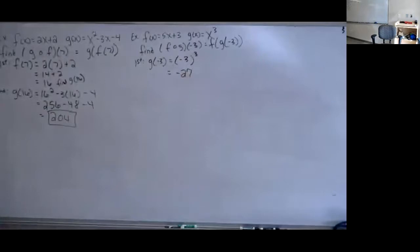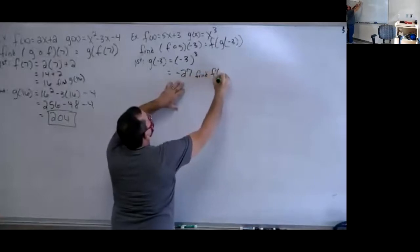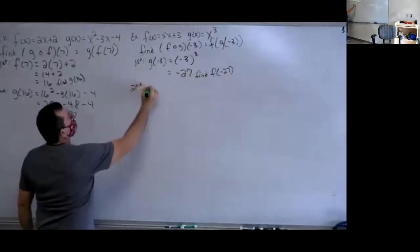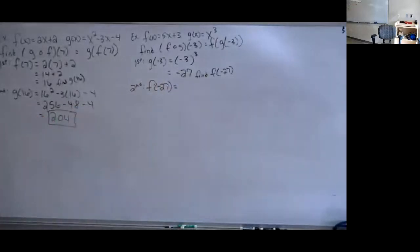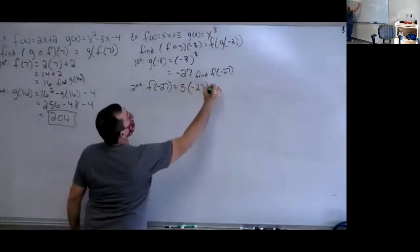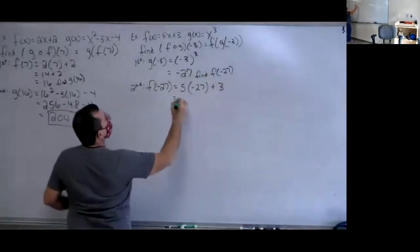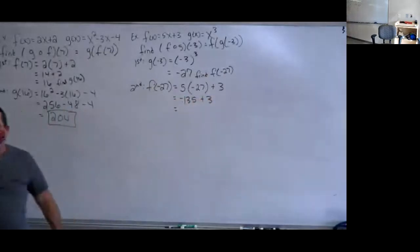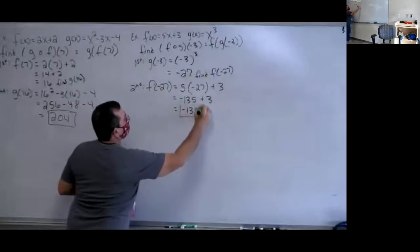Now since I know g, I know what to put into my f. So now we're going to find f of negative 27. That's my f equation: 5x plus 3. So 5 times negative 27 plus 3 is negative 135 plus 3, which is negative 132.